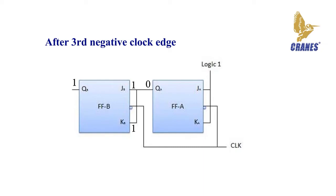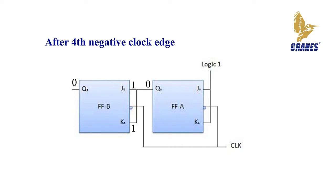After the third negative clock edge, flip-flop A will toggle from 0 to 1, but there is no change of state for flip-flop B. Hence QB and QA is equal to 1 1 after the third clock pulse. After the fourth negative clock edge, QA will change from 1 to 0, and QB will also change from 1 to 0. So QB and QA is equal to 0 0 after the fourth clock pulse.